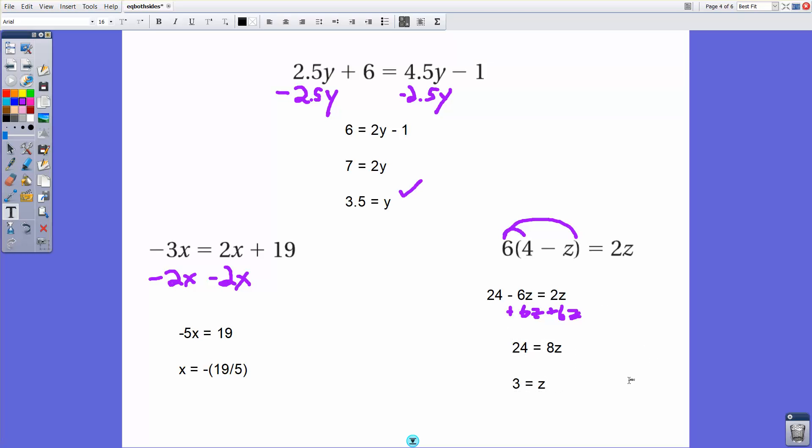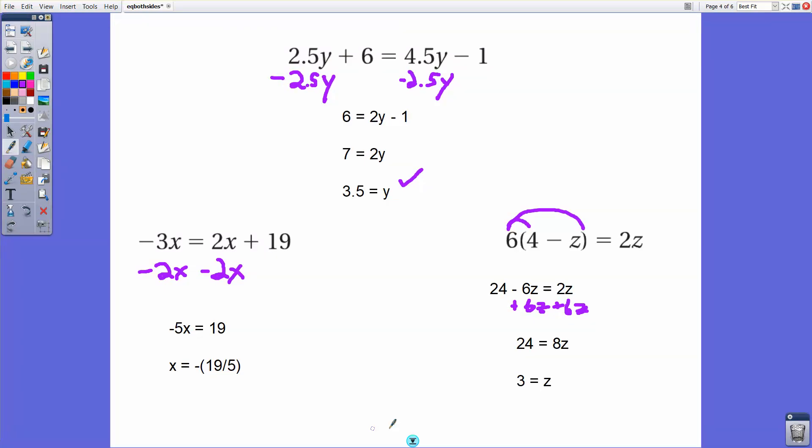And if we check our work here, 4 minus 3 is 1. 6 times 1 is 6. And 2 times 3 is 6. So this answer does work.